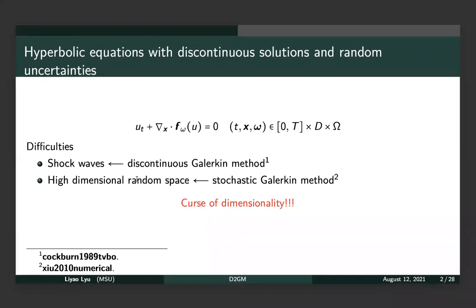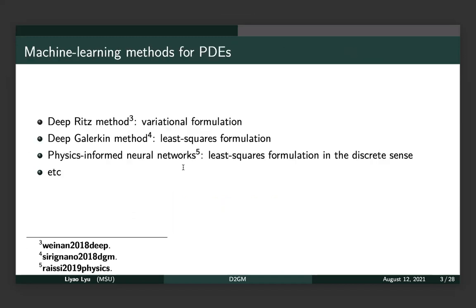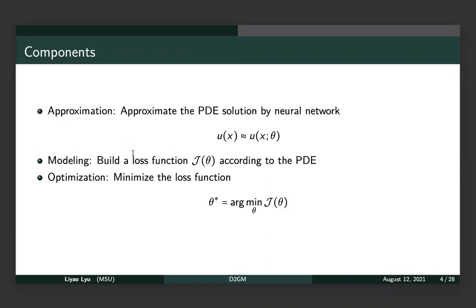When the stochastic problem is set in high dimensions, there will be a curse of dimensionality which prevents us from getting accurate results. Therefore we consider solving this problem with deep learning. There are several ways to solve PDEs with deep learning, for example the deep Ritz method using the variational form of the equation, or the Galerkin method and PINN as previous speakers have discussed. The general idea is to represent the numerical solution with a neural network and define the loss function as a constraint that the network must satisfy, turning the PDE into an optimization problem.